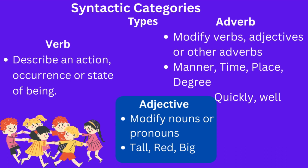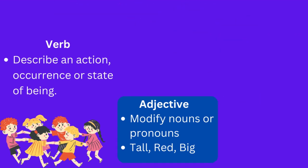We also have adverbs, which modify verbs, adjectives, or other adverbs. They give us information about manner, time, place, and degree. For example: quickly, well. 'They are running quickly' and 'I am perfectly well' — here, 'well' and 'quickly' are examples of adverbs, telling about the degree or manner in which someone is doing something.